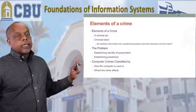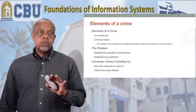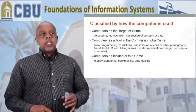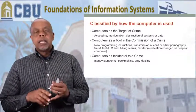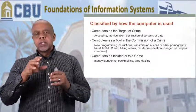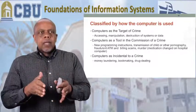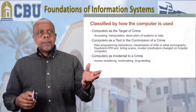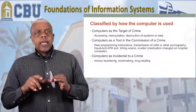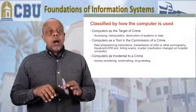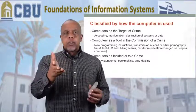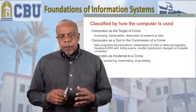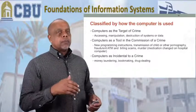Computer crimes can also be classified two different ways: how the computer is used, or who the crime impacts. If a computer is used as a target of a crime — meaning I'm maliciously trying to access, manipulate, or destroy information on your computer — that's the target. Or a computer can be used as a tool in the commission of a crime, like child pornography or billing scams. Also, it could be incidental to a crime — like money laundering for drug dealers, where the crime is selling drugs and the computer is just the backend accounting system. Three different ways based on how the computer is used.